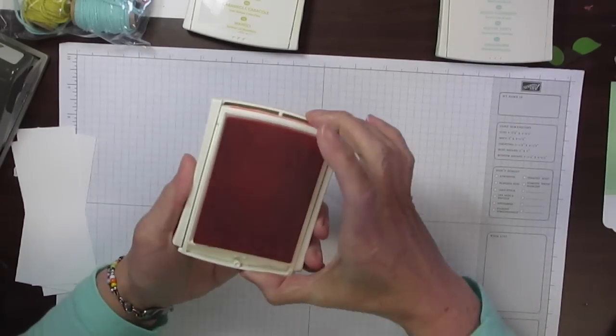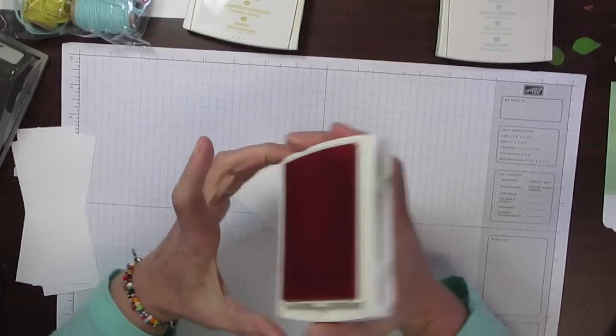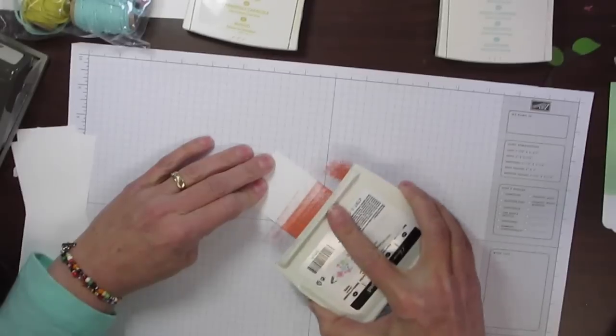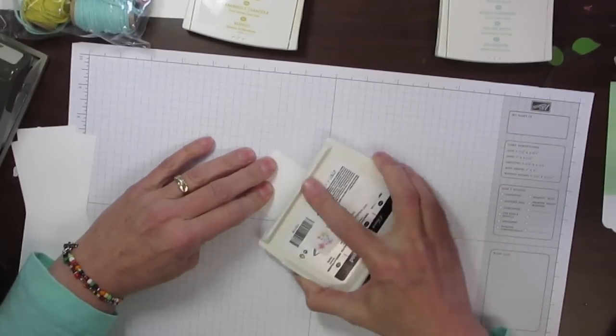I'm going to go ahead and start with the Crisp Cantaloupe. What you're going to do is open up your ink pad and I'm just going to go direct to paper, and you're just going to pat that ink right on the paper.